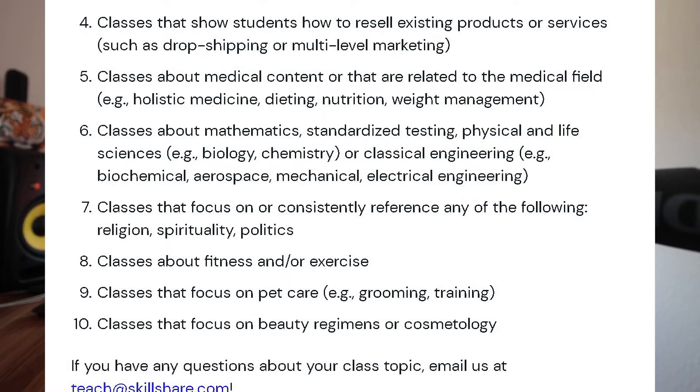Number six is classes about mathematics, standardized testing, and physical and life sciences. Number seven is very interesting because it excludes everything about religions, spirituality, and politics. So if you make a course about meditation and mindfulness that goes into spirituality, you could potentially get a content strike.